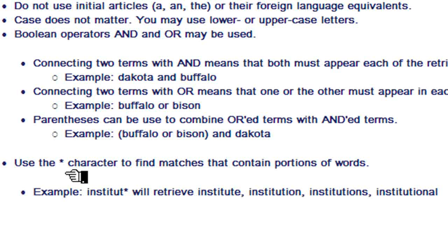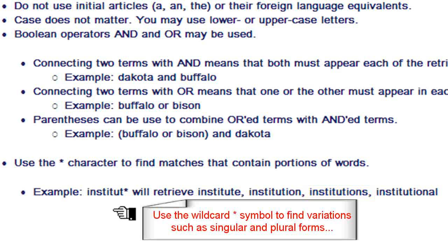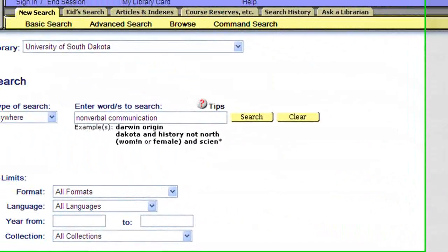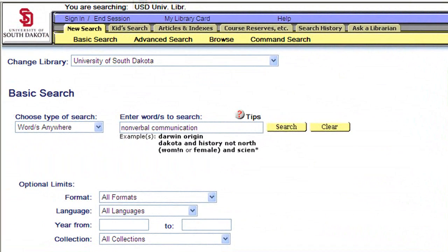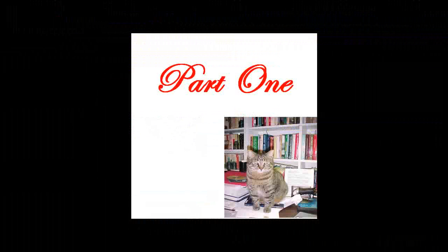For example, if you search for Institute with the wildcard key, that will retrieve Institute, Institution, Institutions, Institutional. The wildcard character is useful when you need to search for variations on a word, such as singular or plural forms. This completes Part 1 of the catalog lesson. Part 2 will cover using the advanced search functions of the library catalog.